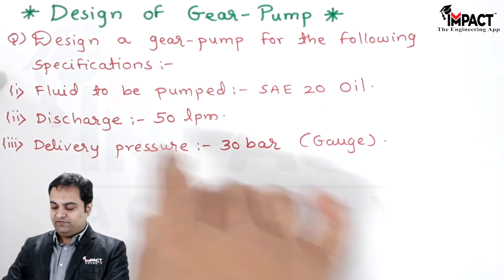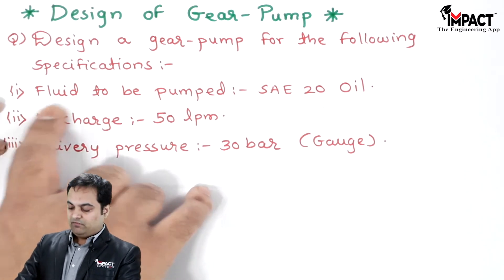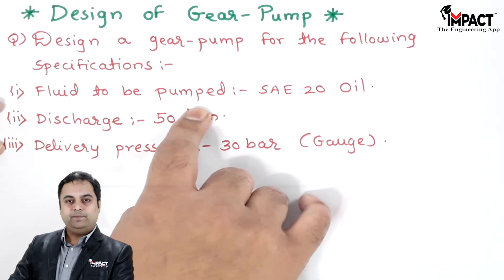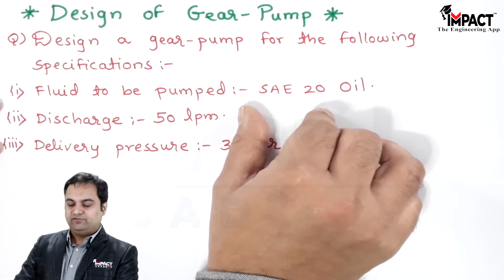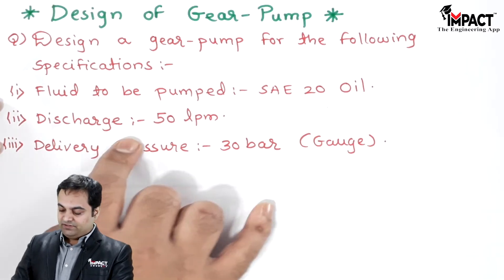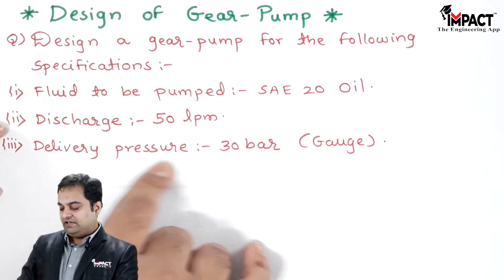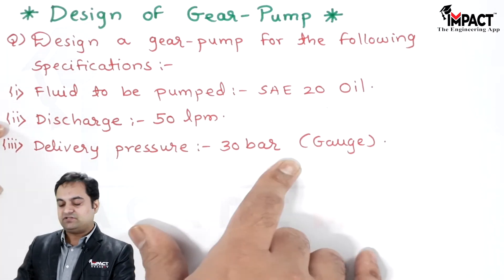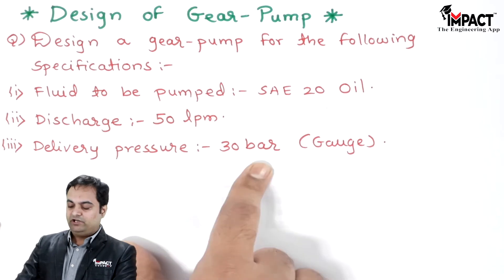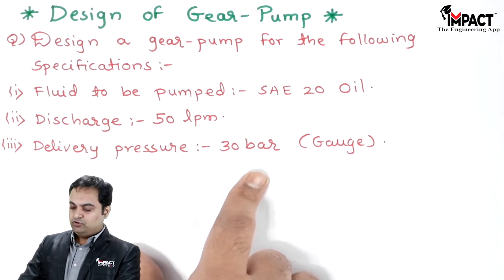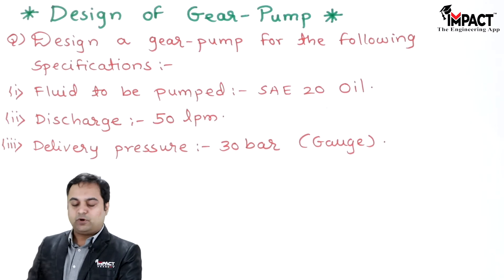The design problem specifies: the fluid to be pumped is SAE 20 oil (SAE 20 is the grade of oil), the discharge is 50 LPM (liters per minute), and the delivery pressure is 30 bar gauge pressure — meaning we must deliver the oil at a pressure of 30 bar.